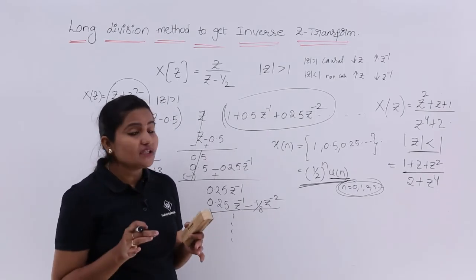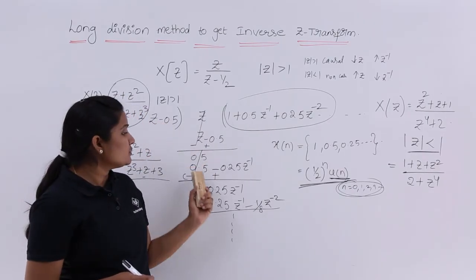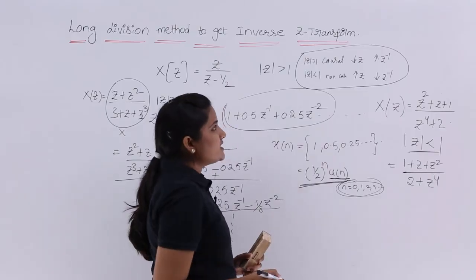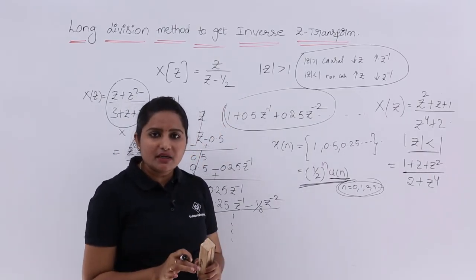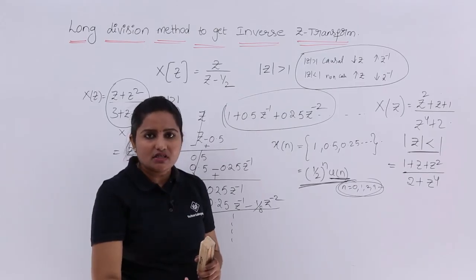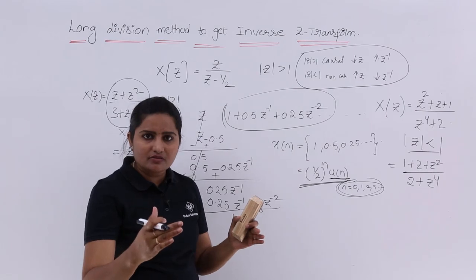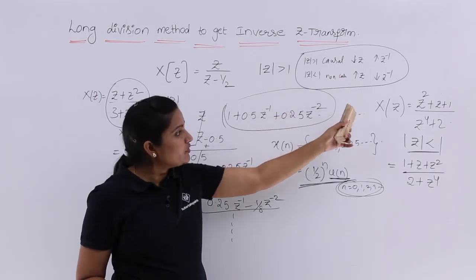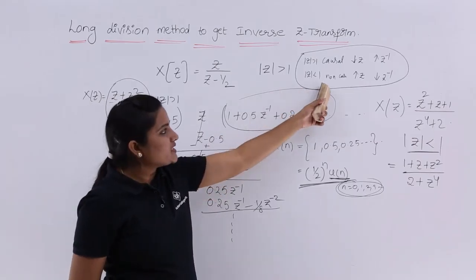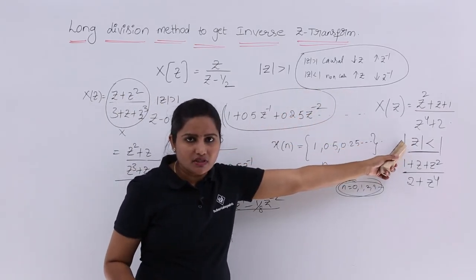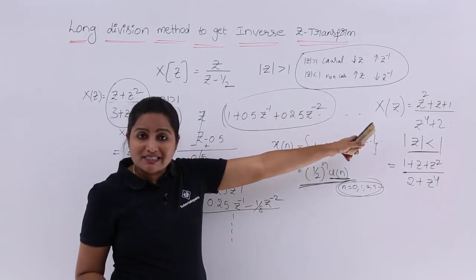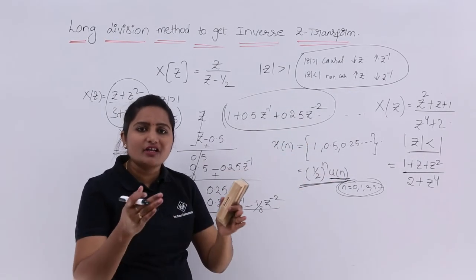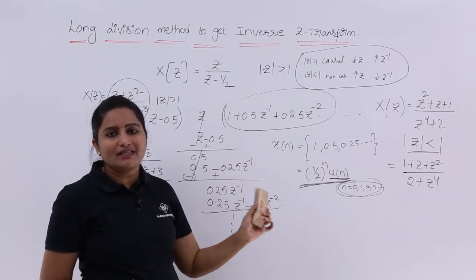This is a very simple method. The key things to follow: every time take reference of Z as considered at first. If the system is causal, consider the equation in descending powers of Z, or ascending powers of Z inverse if given in terms of Z inverse. If the system is non-causal — identified by the ROC — consider ascending powers of Z or descending powers of Z inverse. After rewriting the equation, perform the division to get the correct result.